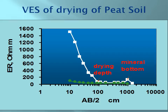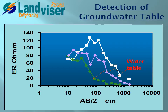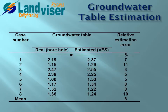VES profiles can also show drying depth in peat soils — during a particularly dry summer, the first half-meter of peat soil was extremely dry, versus when it is wet as shown in another profile. A similar situation was observed in arid conditions in the Volga Delta, where sandy soils have evaporation and the groundwater table is about two to five meters. The VES curve shows a twist toward low resistivity indicating water — in one case it is salty water with very low resistivity, in another case the water is less salty.